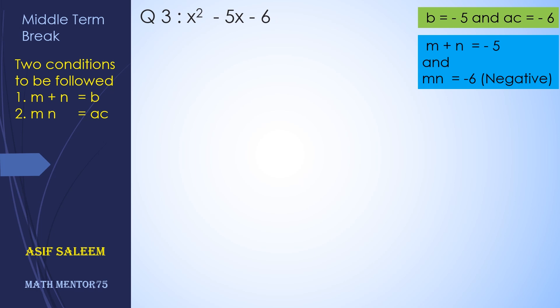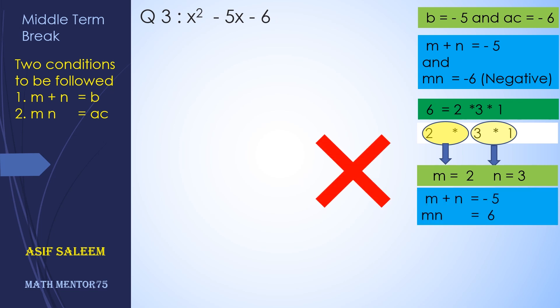That means the two numbers which we will use should have different signs. Now let's group them: first group contains 2 and second contains 3 and 1. M is 2 and n is 3. When we add them we get minus 5, and the product is 6. So this is not the right grouping.